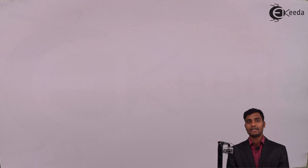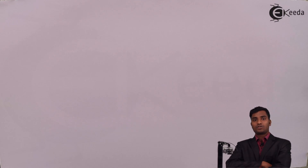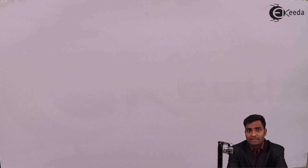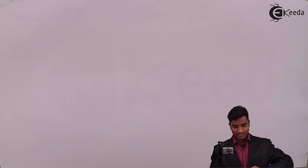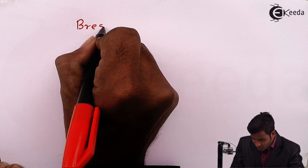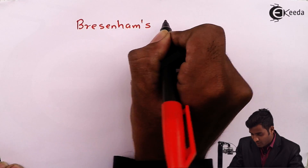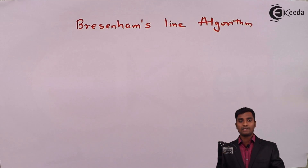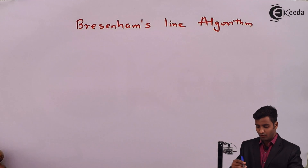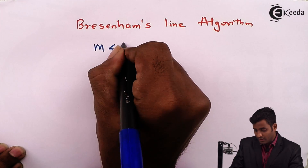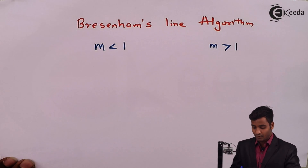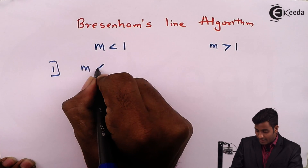Hello friends. In this video we will study Bresenham's line algorithm. There is one more algorithm to generate a line which is called Bresenham's line algorithm. It is based on the incremental method. This algorithm also has two cases: for slope less than one and for slope greater than one. Now first we will derive the algorithm for slope less than one.